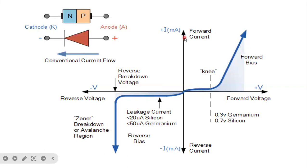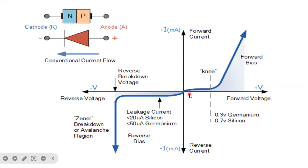The current flowing through the diode is measured in milliamps. The voltage across the diode is in the range of 0.3, 0.5, 0.8 — very small voltage. This forward voltage and this reverse voltage: the positive y-axis is called forward current and the negative y-axis is called reverse current.